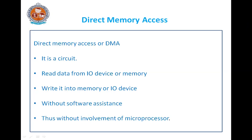Use of Direct Memory Access can get data into and out of the system quickly. It is a circuitry that can read data from I/O devices such as serial ports or networks, and write it into memory — or read from memory and write to an I/O device — without software assistance and associated overhead.